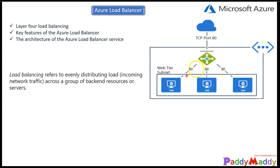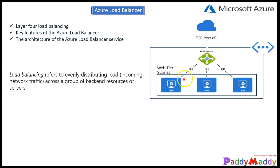The health status of those virtual machines needs to be validated at all times. If the middle virtual machine has some issues, the system should dynamically change the traffic to send it only to the first and last virtual machines. This is called the health probe, which continuously checks on given port numbers about the health of a specific service. If a service is not available, it tells the load balancer not to send traffic to those specific VMs.